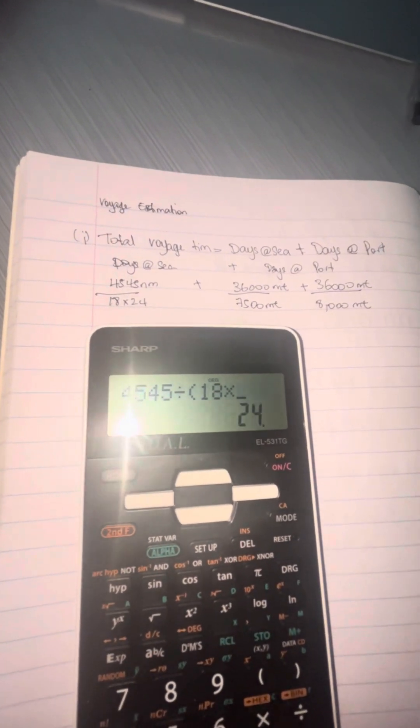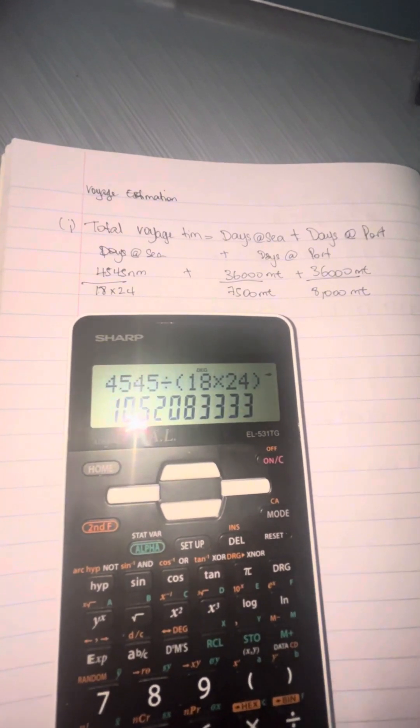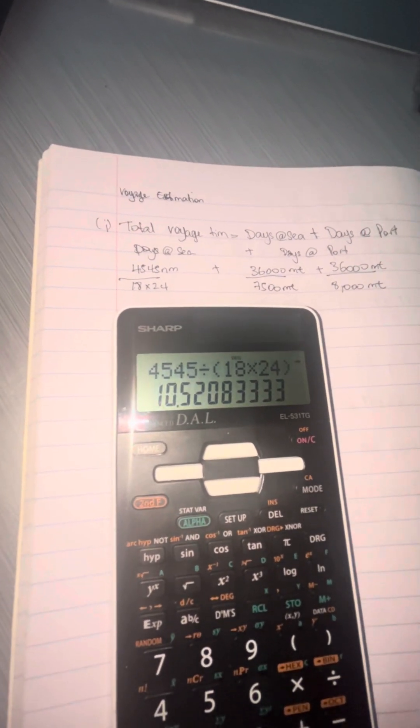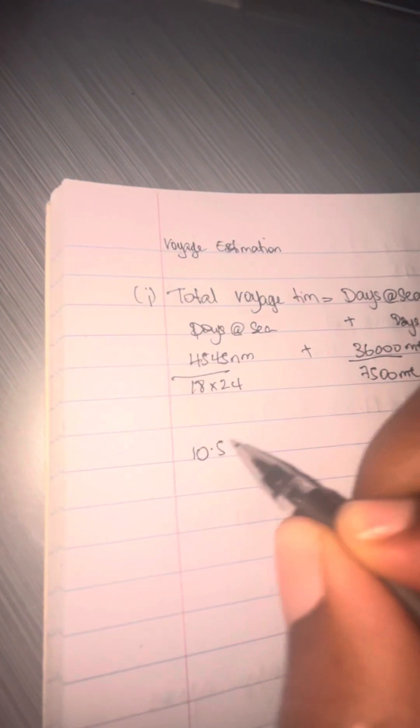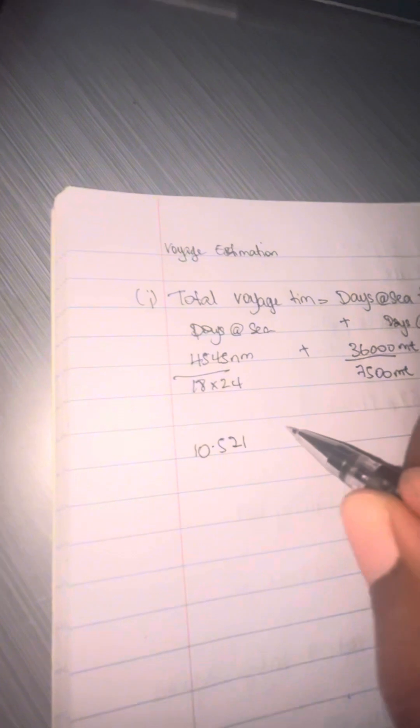The 7,500 is what was loaded and 8,000 is what was discharged. Here I am punching the figures into my calculator. We're going to use three decimal places. The days at sea equate to 10.521.